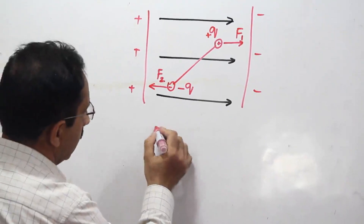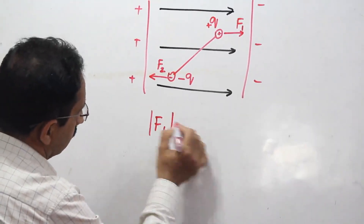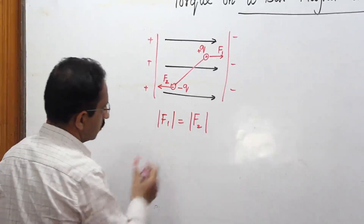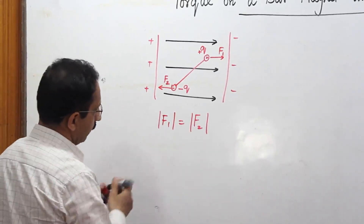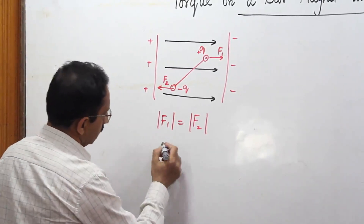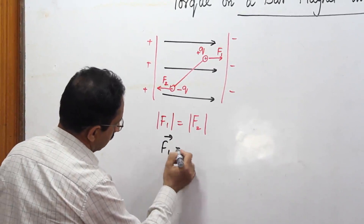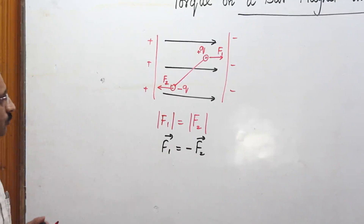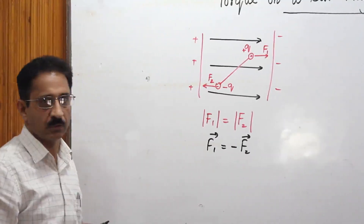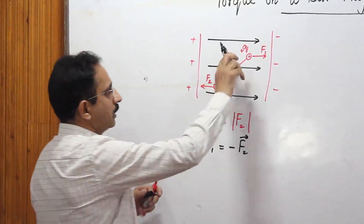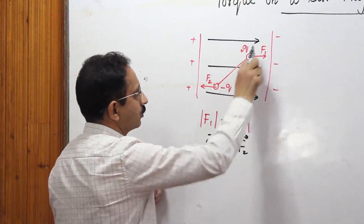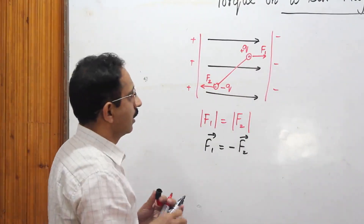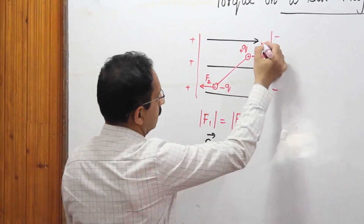The forces F1 and F2 are equal in magnitude but opposite in direction. Even though the net force on the object is zero, there is a rotational tendency because these two forces form a couple which tends to rotate the rigid body — the electric dipole.